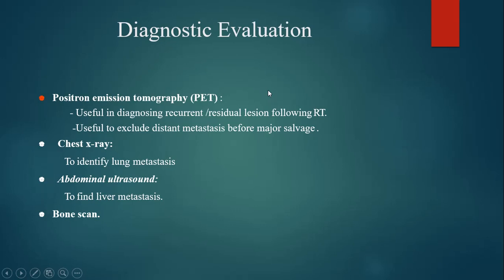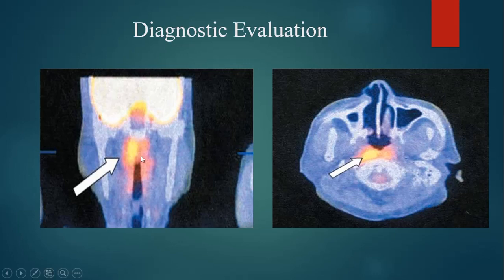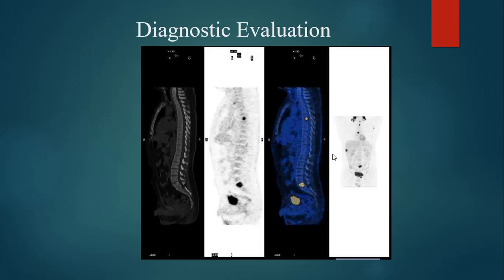PET scan is useful in diagnosing recurrent and residual lesions following radiotherapy and to exclude distant metastasis before major salvage surgery. PET scan tells us about the metabolic activity of cells; since cancer cells have a high metabolic rate, bright spots can be seen in areas where cancer cells are present. X-ray can tell us about lung metastasis, abdominal ultrasound about liver metastasis, and bone scan about bone metastasis.